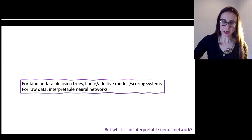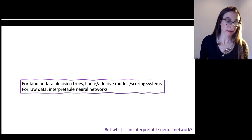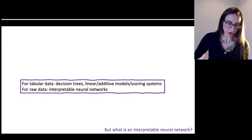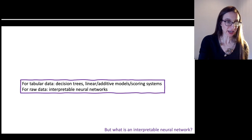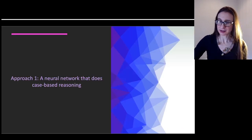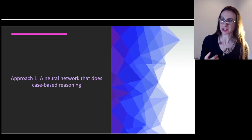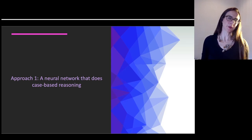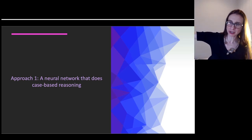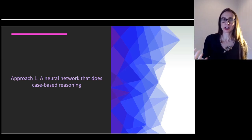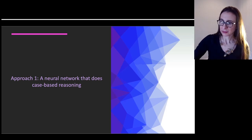Let me talk about what an interpretable network might be. I'll give two definitions, starting with one that uses case-based reasoning. Case-based reasoning is like the way real estate agents price houses: 'Why did you price my house that way? Well, your roof looks like that other house's roof and your backyard looks like that other house's backyard, and the combination of their prices contributes to the price I'm giving your house.'